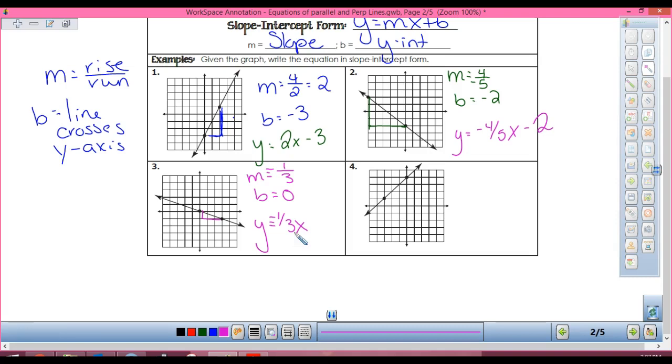Alright, number four. Rise three, run three. What's my slope? One. Where does it cross the y-axis? Four.